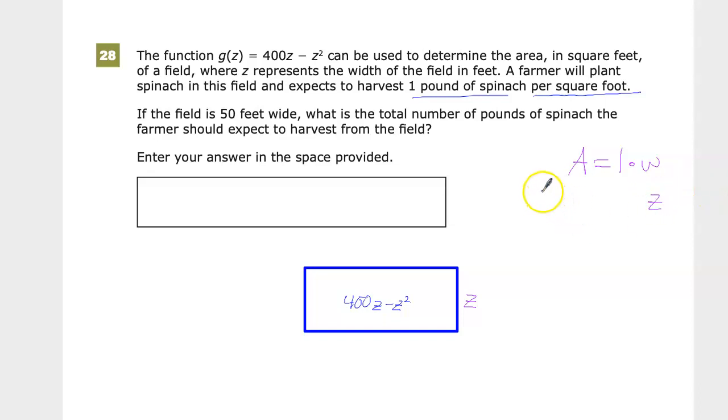I'm looking for something that I can multiply by z to give me 400z minus z squared. Now, it's just factoring. I'm just going to factor out a z from this whole thing as the long and short of what's going to happen next.